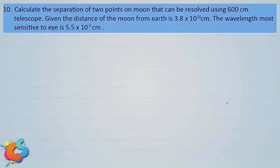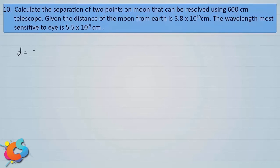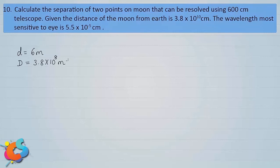Now let's take up a question on telescope. Calculate the separation of two points on the moon that can be resolved using a 600 centimeter telescope, given the distance of the moon from earth is 3.8 × 10¹⁰ centimeter and the wavelength most sensitive to the eye is 5.5 × 10⁻⁵ centimeter. The telescope diameter is 600 cm = 6 meter, and the earth-moon distance D = 3.8 × 10⁸ meter.